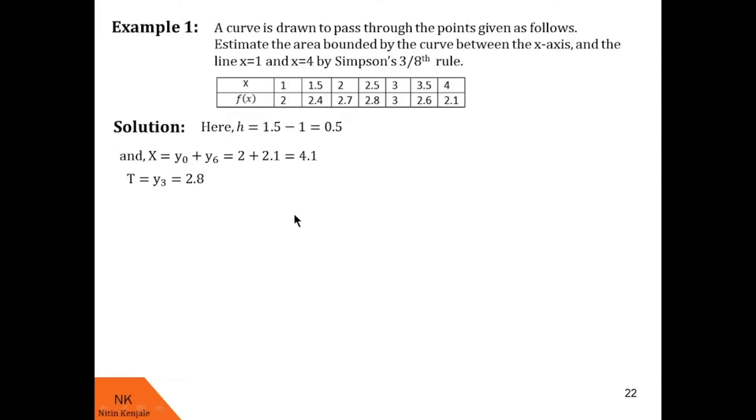Now let us find out capital R. Capital R is sum of remaining ordinates. Here remaining ordinates are y1, y2, y4 and y5. So when we add them together, we found R as 10.7.